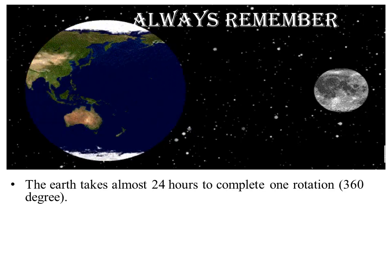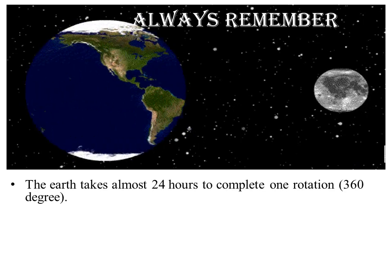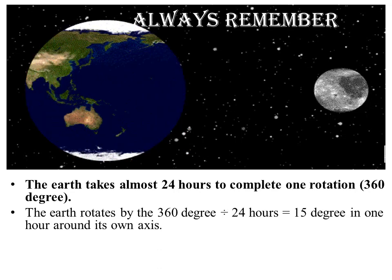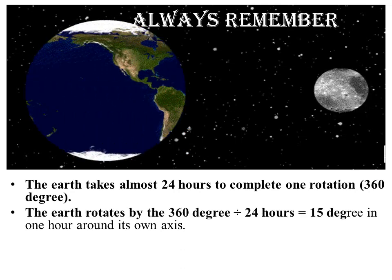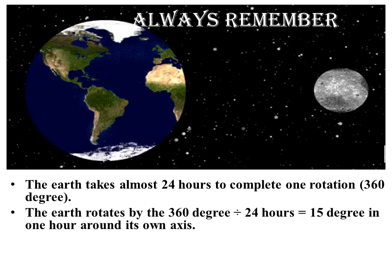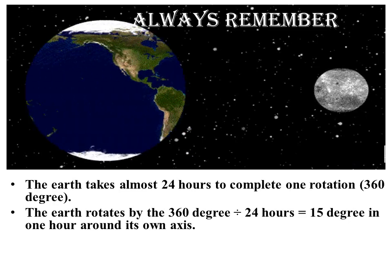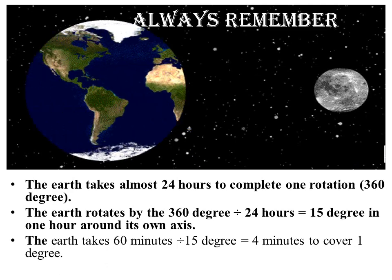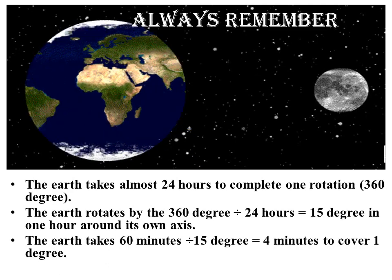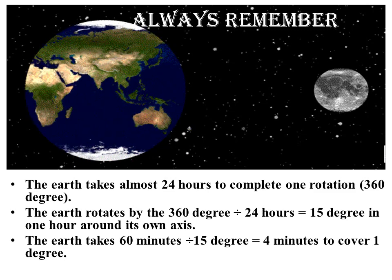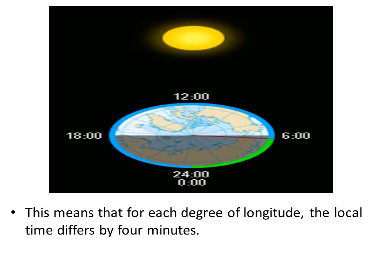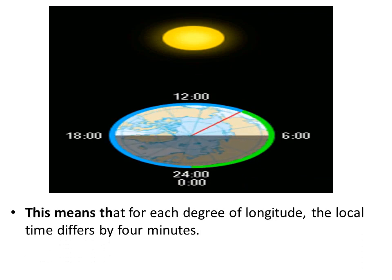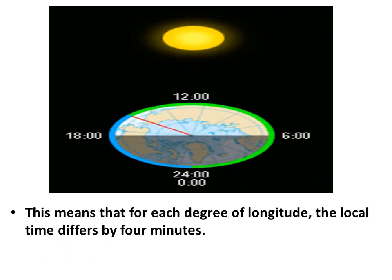Always remember: the earth rotates 360 degrees in 24 hours, which equals 15 degrees per hour. The earth takes 4 minutes to cover 1 degree (60 minutes ÷ 15 degrees = 4 minutes). This means that for each degree of longitude, the local time differs by 4 minutes.